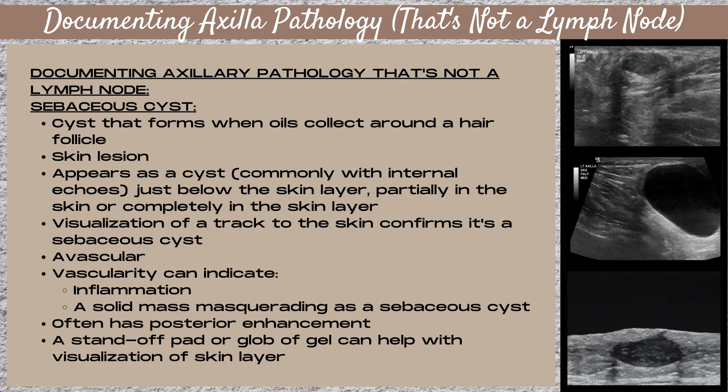Sebaceous cysts should be avascular, meaning no internal vascularity. If you do see vascularity, this can indicate that the sebaceous cyst is inflamed — they can often get inflammation or infection — or it's a solid mass masquerading as a sebaceous cyst. Sebaceous cysts often have posterior enhancement, and it's really helpful to use either a standoff pad or a glob of ultrasound gel to help with visualization of the skin layer. Since it's a skin lesion, it will be located very superficially on the ultrasound image.